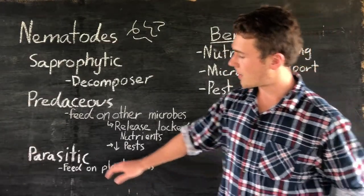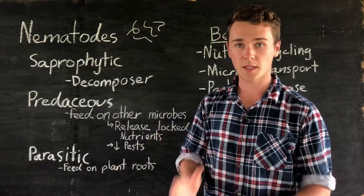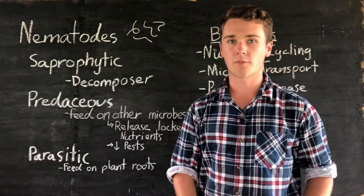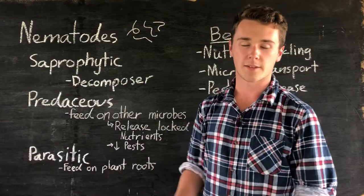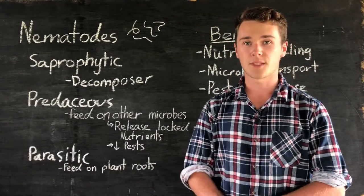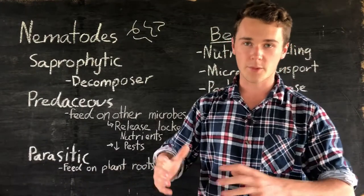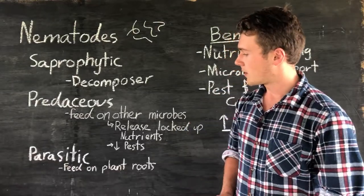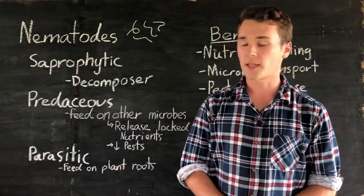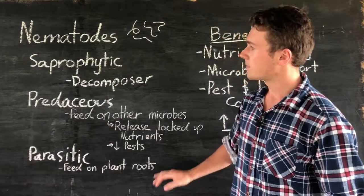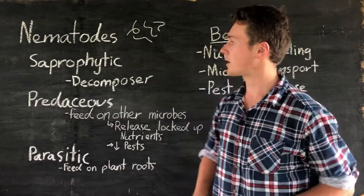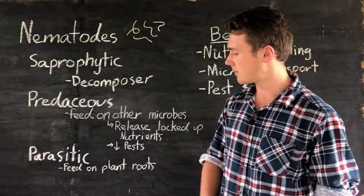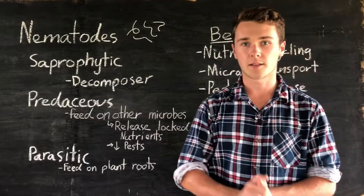Which leads to our parasitic nematodes. These ones feed off our plant roots, and anything that feeds off of our plant roots by eating the plant root is bad — it's damaging the plant and we don't want that. They use their specialized mouthpiece to feed on the plant root, almost in a similar way that the saprophytics decompose organic matter. They will eat plant roots.